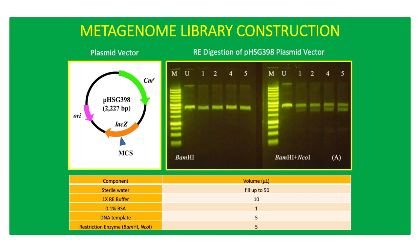The digestion reaction contains 5 microliters DNA, 10 microliters buffer, and 5 microliters BamHI restriction enzyme in a 50 microliter volume per reaction, incubated at 37 degrees Celsius in 1-hour intervals for 5 hours. 1 microliter of 0.5% bovine serum albumin was used to stabilize the reaction. Dephosphorylation of the plasmid vector to prevent self-ligation was performed using bacterial alkaline phosphatase.